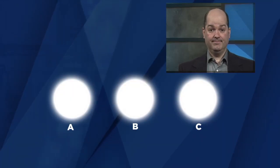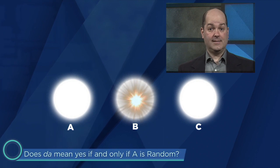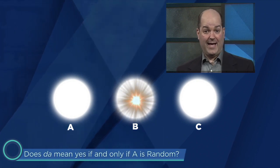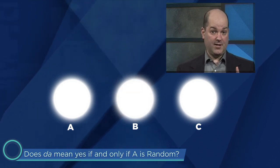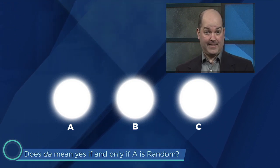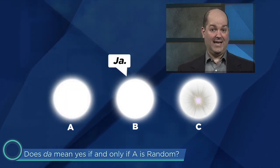Suppose we've learned B's identity and that we know he's not Random. We can now ask him, 'Does da mean yes if and only if A is random?' If we know that B is True, then we're in precisely the situation we considered a moment ago, where 'A is random' is playing the role of X. An answer of da means that A really is random, and an answer of ja indicates that actually C is random. If we know that B is False, then the logic will be reversed, but we'll still be able to identify Random. In this scenario, we already know B's identity, our question definitively identified which of A and C is random, and we'll know that the remaining god is True.